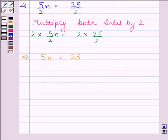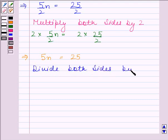So, we will divide both sides of this equation by 5. We have 5N divided by 5 equals 25 by 5. This implies N is equal to 5.